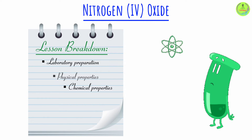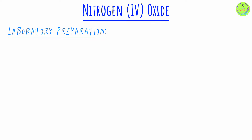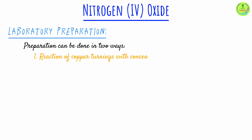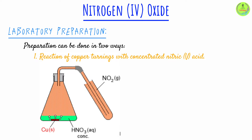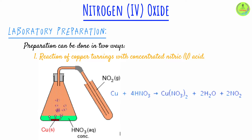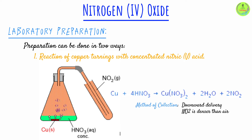If you want to prepare nitrogen dioxide in the lab, you can do so through two different ways. Number one: by reacting copper metal with concentrated nitric acid. Copper reacts with concentrated nitric acid to form copper(II) nitrate, nitrogen dioxide, and water. The nitrogen dioxide that is formed is collected using the downward delivery method, because it's denser than air.